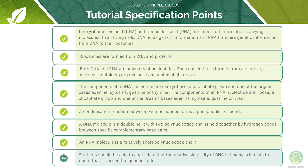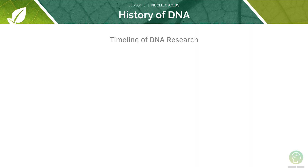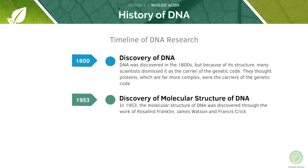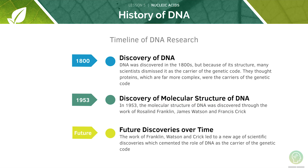Finally we will look at DNA and the genetic code. DNA stores all the genetic information in an organism. The AQA specification requires you to know a little bit about the history of DNA structure. 1800 was the year that DNA was discovered, but it wasn't until over 150 years later that the molecular structure was discovered, which then led to many more discoveries in the future. You don't need to remember the dates or the names — just a rough timeline.